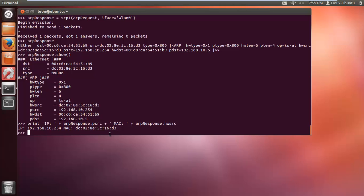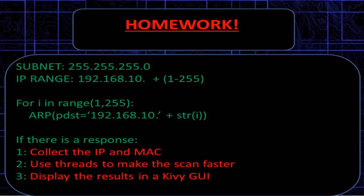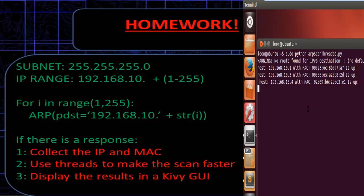This will be very useful for our GUI so we can display the information we need. To scan the full network, you just need to loop through your subnet range and collect the IP and MAC for each node. It's going to be slow done this way - investigate using threads. I made a threaded version that scans 255 addresses in about 10 seconds. Another task: play around with Kivy and display the results there.